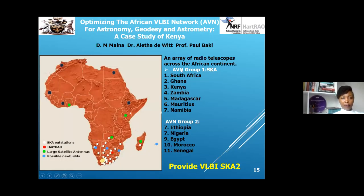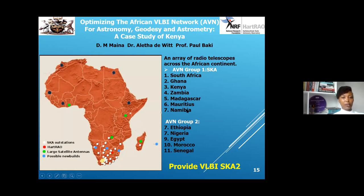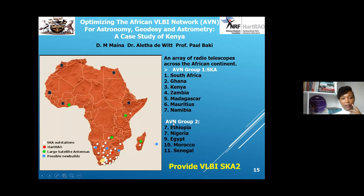We have SKA partner member countries in Africa led by South Africa, including Ghana, Kenya, Zambia, Madagascar, and Mauritius. For the purposes of these studies, we opted to add other African countries — Ethiopia, Nigeria, Egypt, Morocco, and Senegal — which formed what we call the African VLBI Network, or AVN.